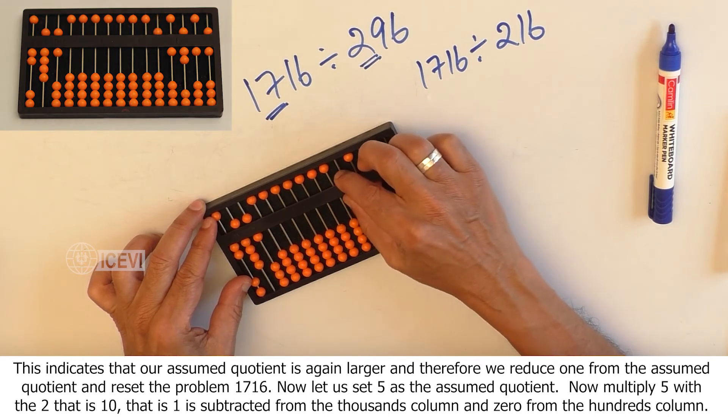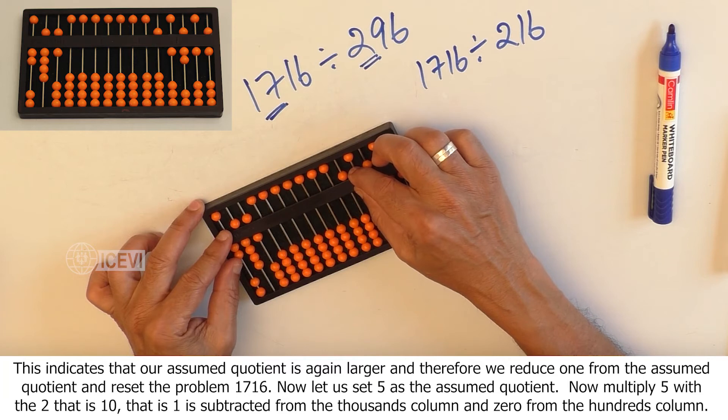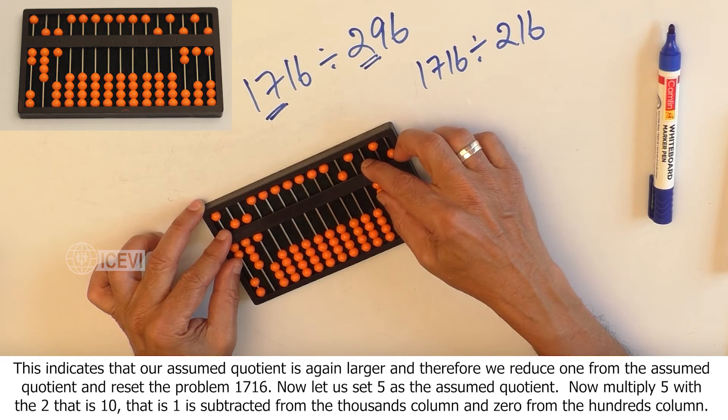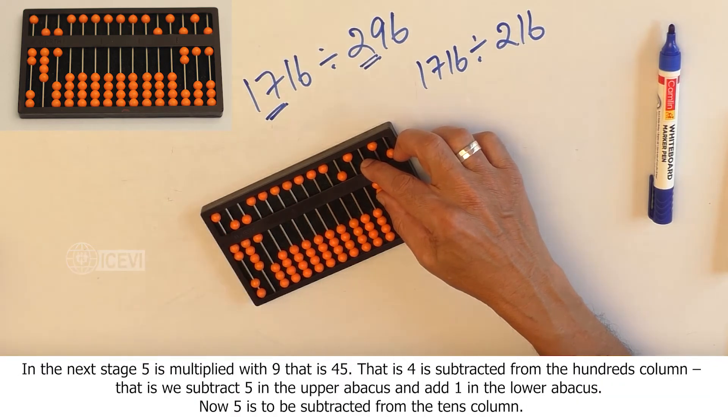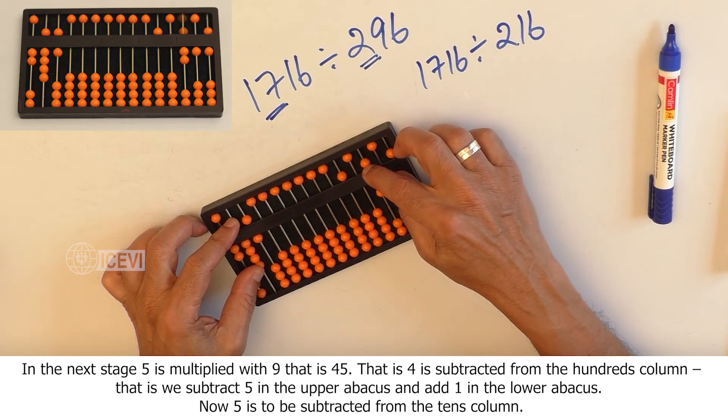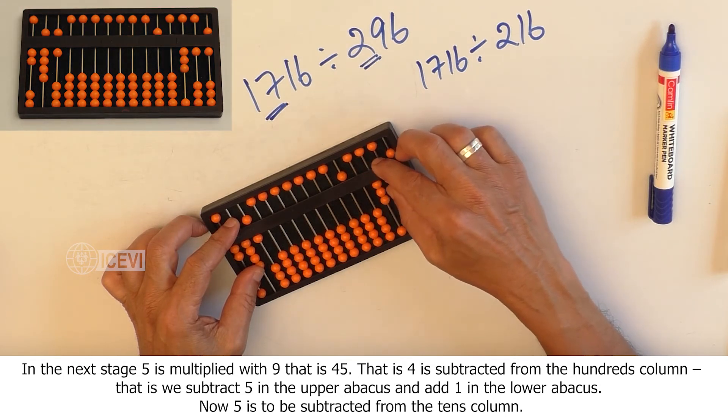Now, multiply 5 with 2, that is 10. 1 is subtracted from the thousands column and 0 from the hundreds column. In the next stage, 5 is multiplied with 9, that is 45. 4 is subtracted from the hundreds column. That is, we subtract 5 in the upper abacus and add 1 in the lower abacus.